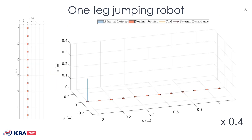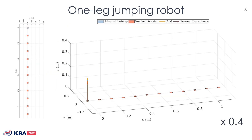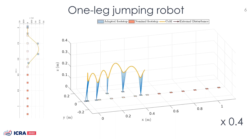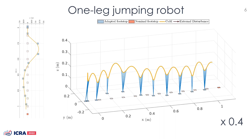We validate the proposed control strategy on a simulation of a one-leg system performing a jumping task. Even if an external force acts on the system's central mass, the controller automatically compensates for the disturbance effect by adapting the location of the footsteps.